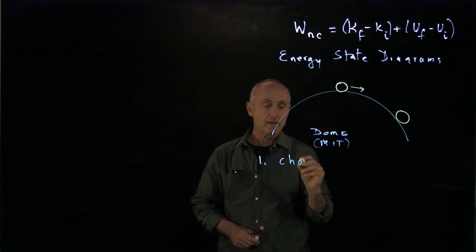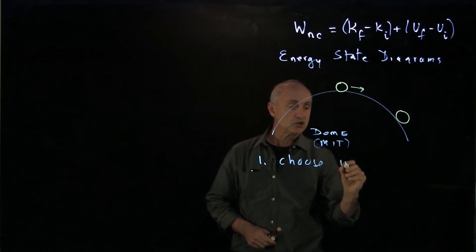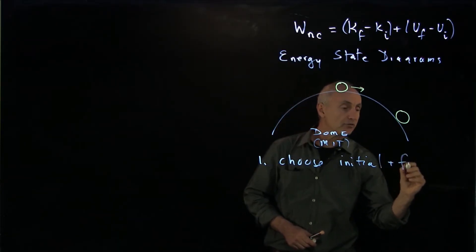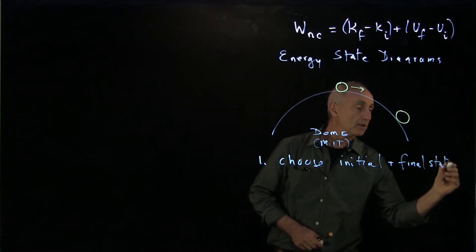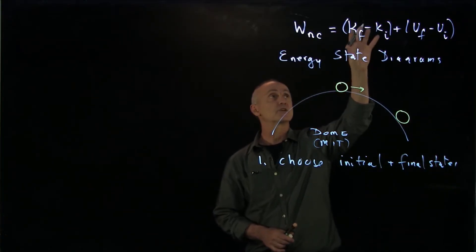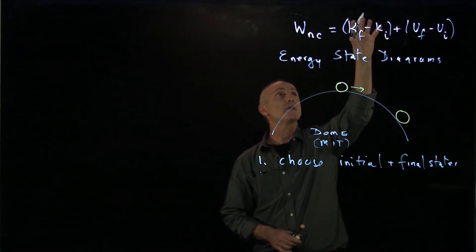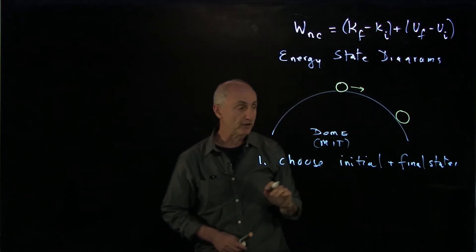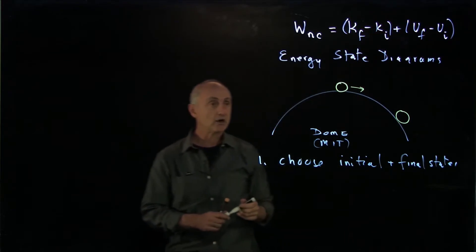And the way we do it is that we choose first initial and final states that we're considering. Because our first idea in the energy diagram is to compare the change in energy, kinetic energy, between the initial and change of potential energy between the initial and the final states.